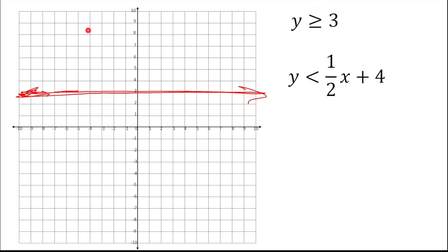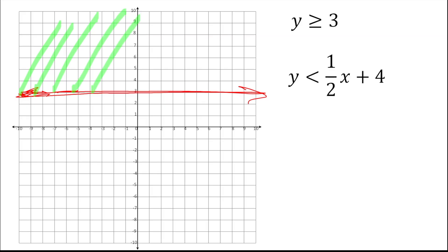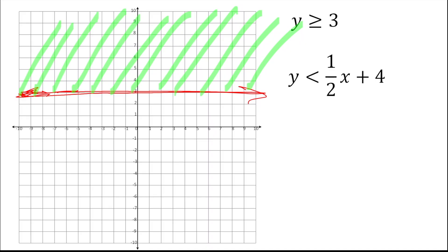Every inequality has a shade — either the top or the bottom. Reading the inequality: Y is greater than or equal to 3. Any number greater than 3 is four, five, six, seven — so the top is going to be shaded. We shade from our line all the way to the top. This upper half-plane is the solution if we were doing only this one inequality.